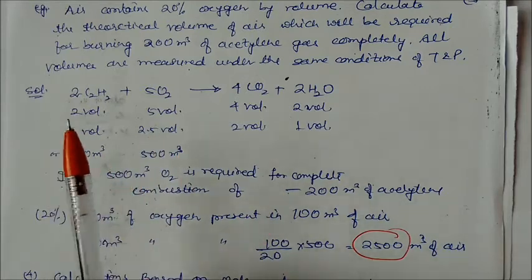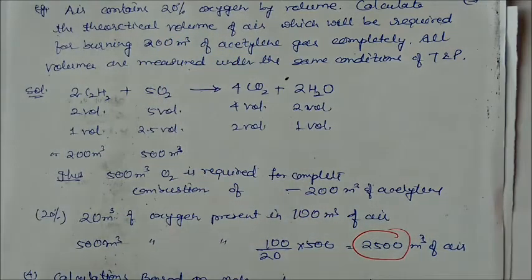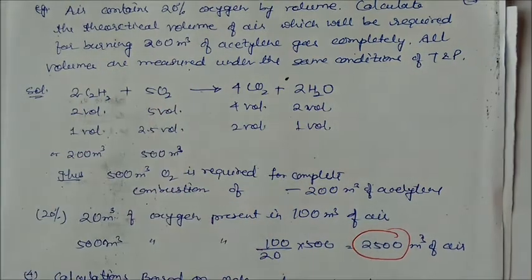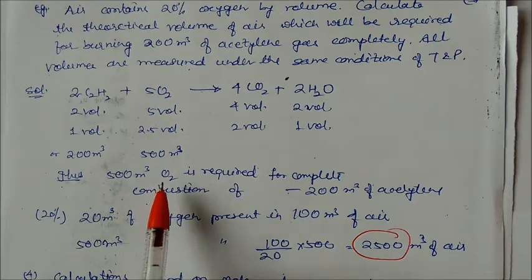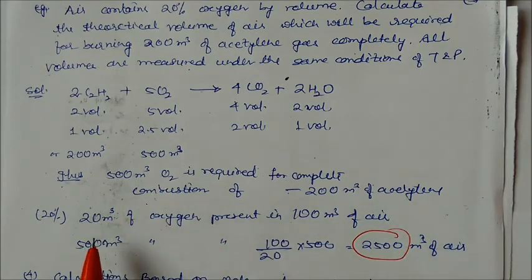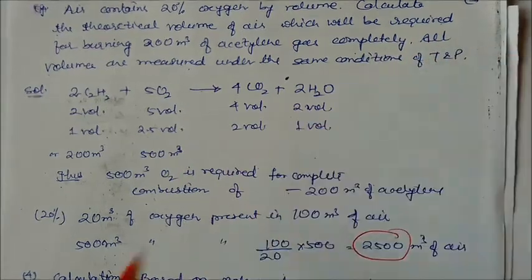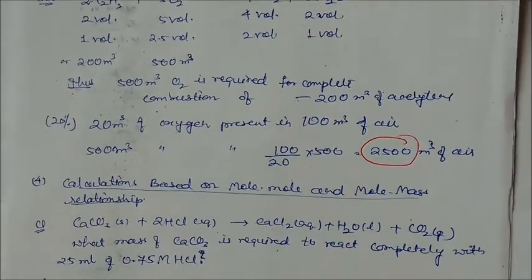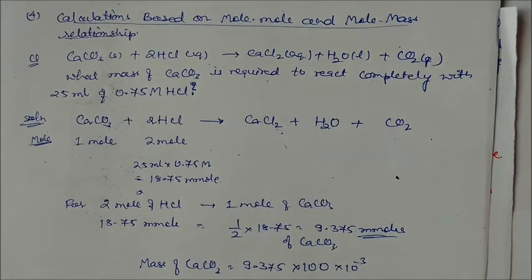Since air contains 20% oxygen by volume, 100 volumes of air gives 20 volumes of oxygen. For 500 m³ of oxygen, air required = (500 / 20) × 100 = 2500 m³. So 2500 m³ of air is required to burn 200 m³ of acetylene completely. This is the volume-volume relationship.